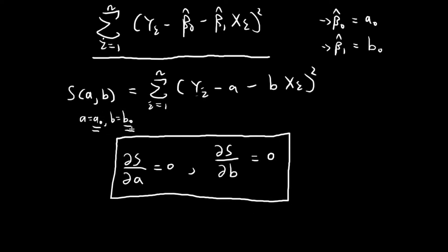Once we find A0 and B0, we can set the estimates equal to A0 and B0. This is the expression we're going to focus on in this video. By considering this expression alone, it isn't actually enough to guarantee that the values of A and B satisfying these two conditions will be a minimum point.